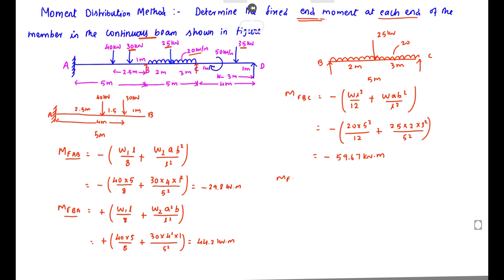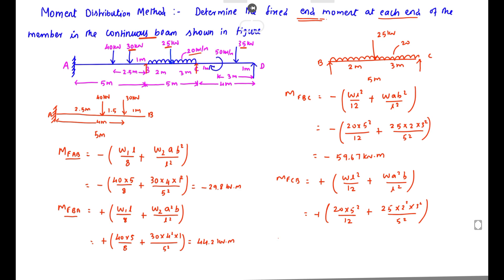For MF_CB, we take the positive formula: plus W·L²/12 plus W·a²·b/L². Substituting: plus 20 × 5²/12, plus 25 × 2² × 3/5². Solving this, we get MF_CB = +53.67 kN·m.